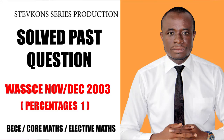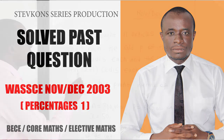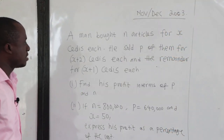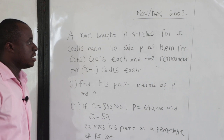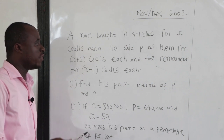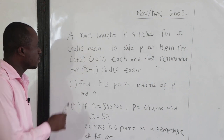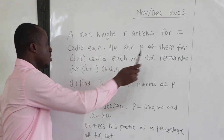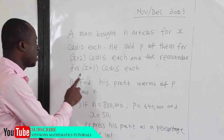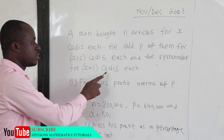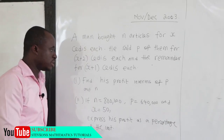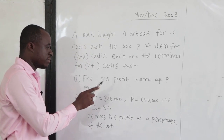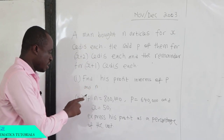This is Novdex 2003. A man bought N articles for X CDs each. He sold P of them for X plus 2 CDs each, and the remainder for X plus 1 CDs each. Find his profit in terms of P and N.